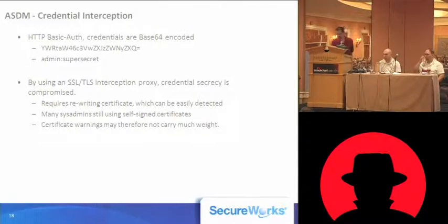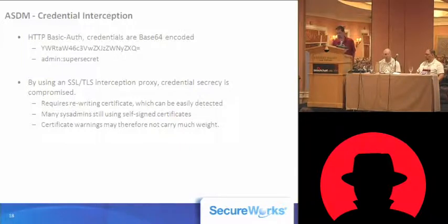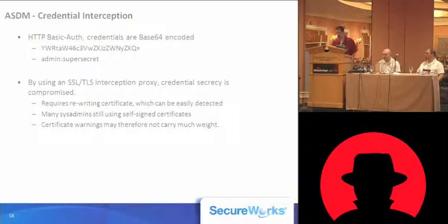The obvious weakness here is that if we use an SSL interception proxy, we can decrypt and re-encrypt the session and man-in-the-middle it. This would require sending a different certificate to the client since we don't have access to the private key the ASA is using. So it is easily protectable. However, I found that oftentimes people run self-signed certificates on their ASAs — there's generally a fairly small user base, often as few as one or two administrators.